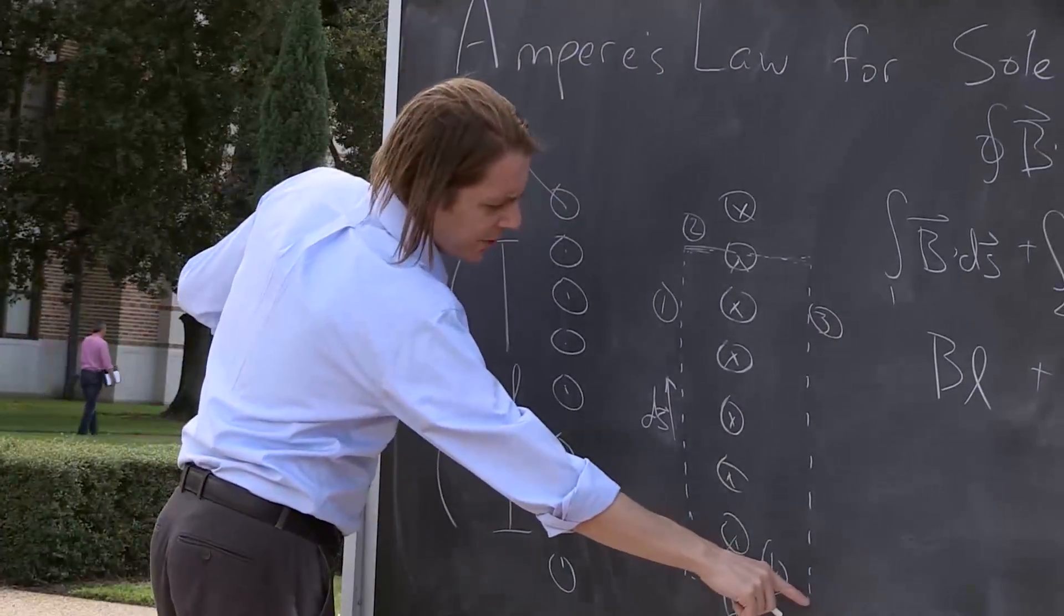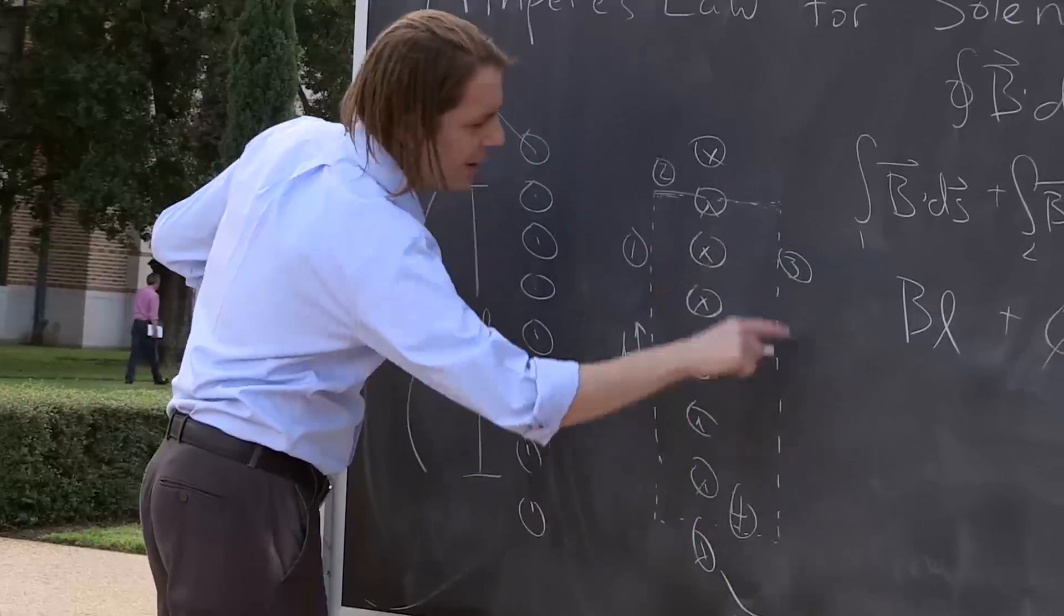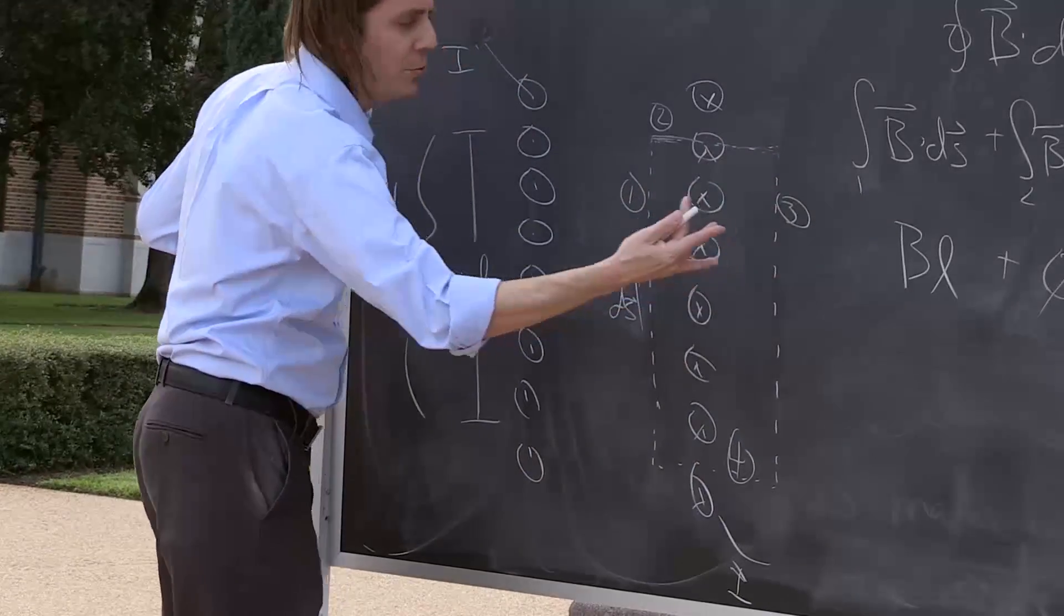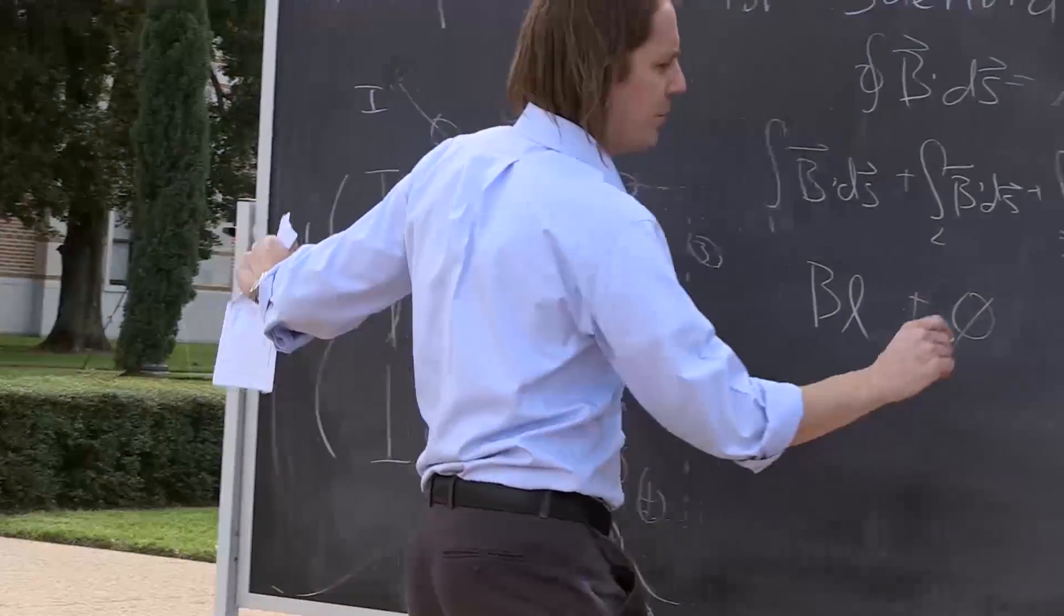B three is down here. And as you march your dS's this way, there's no B field. The B is very weak on the outside. So this one is zero.